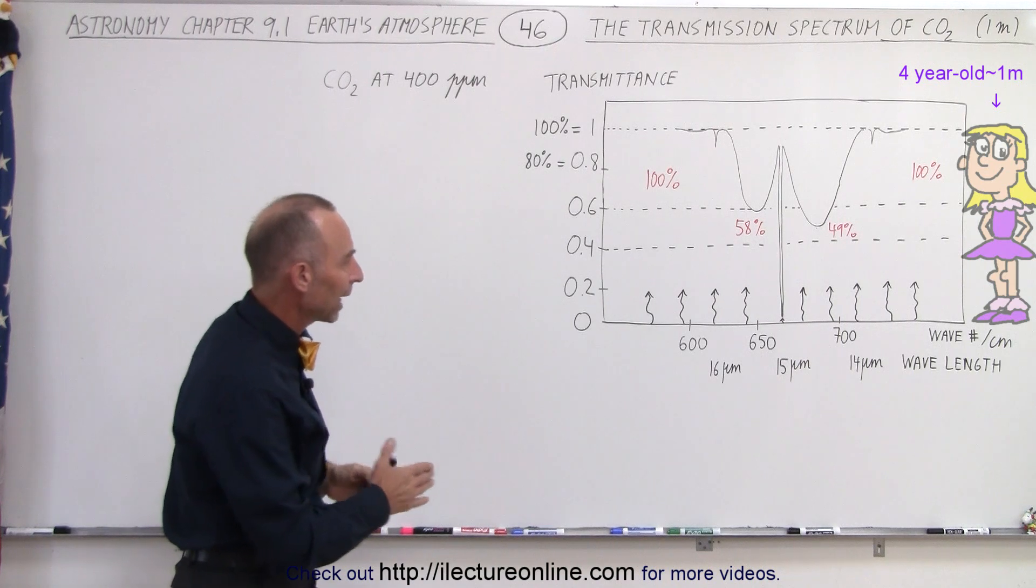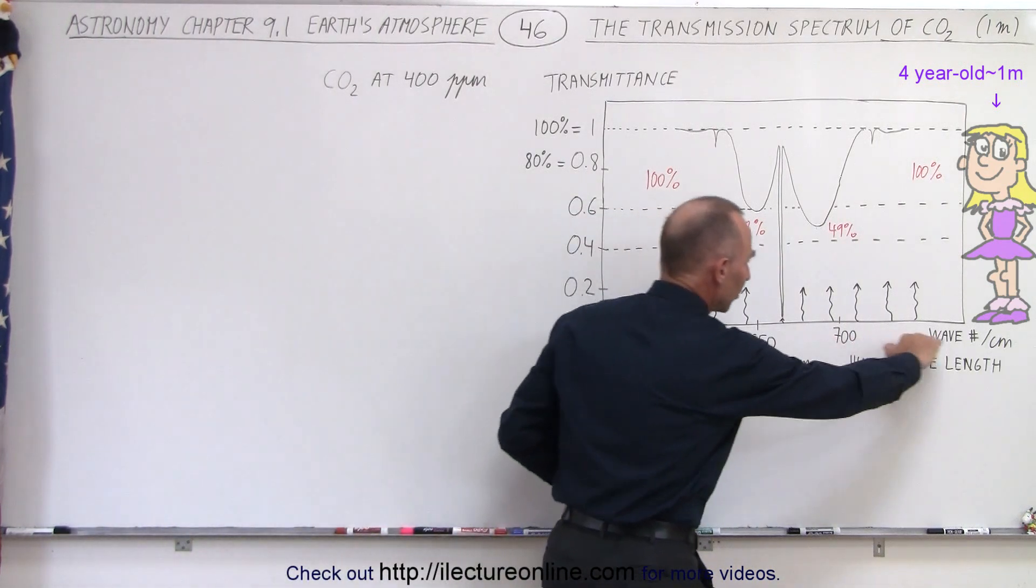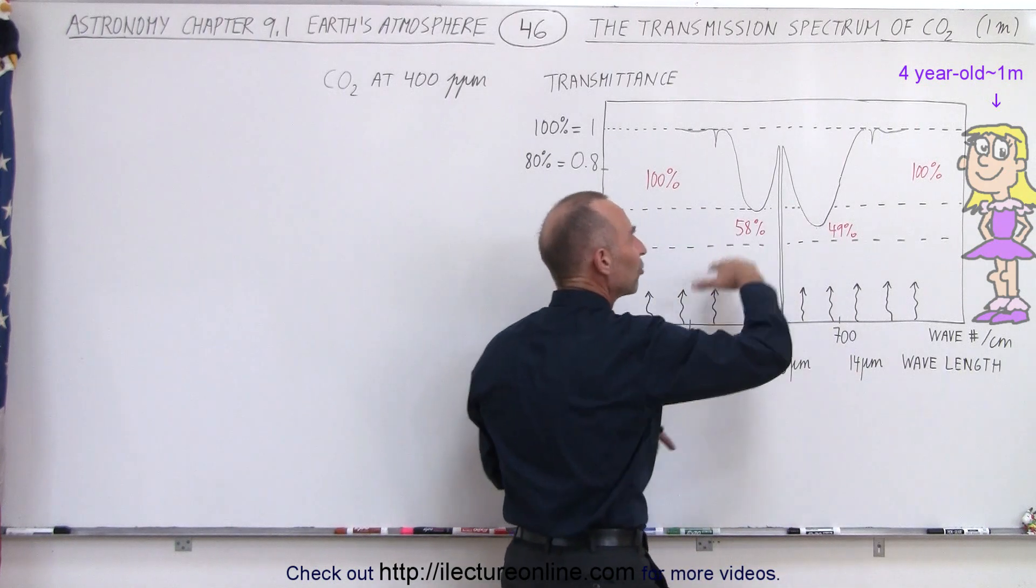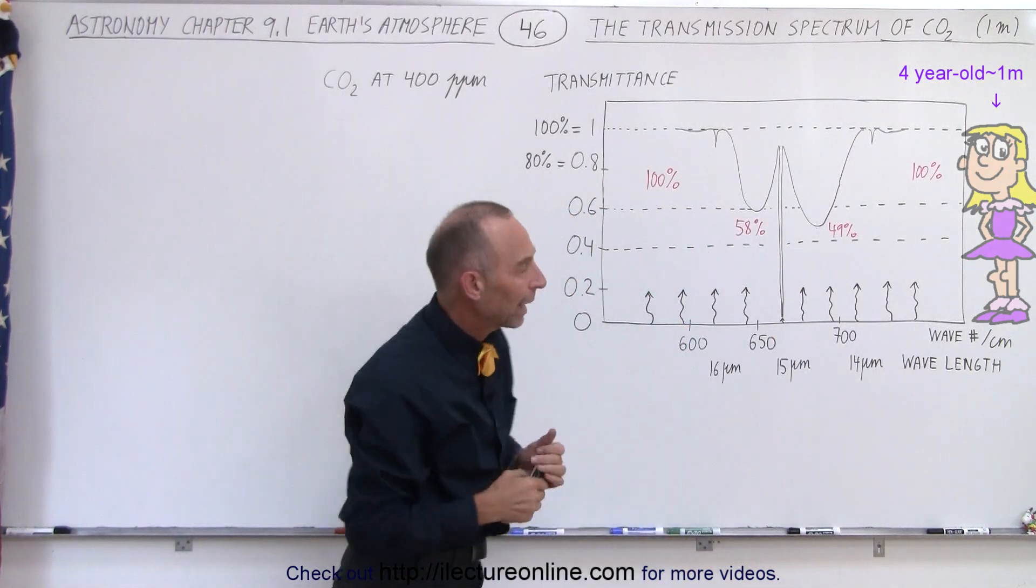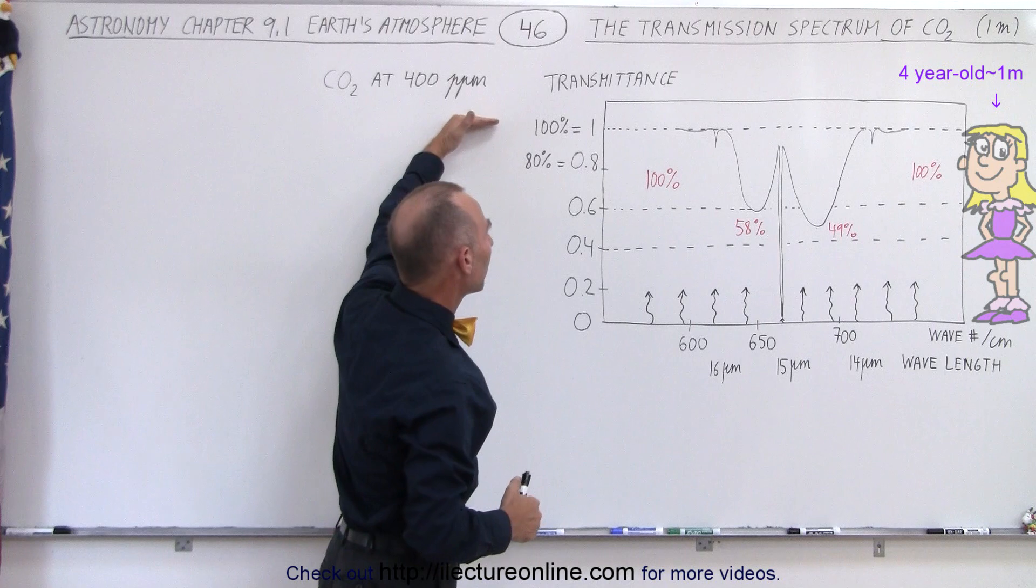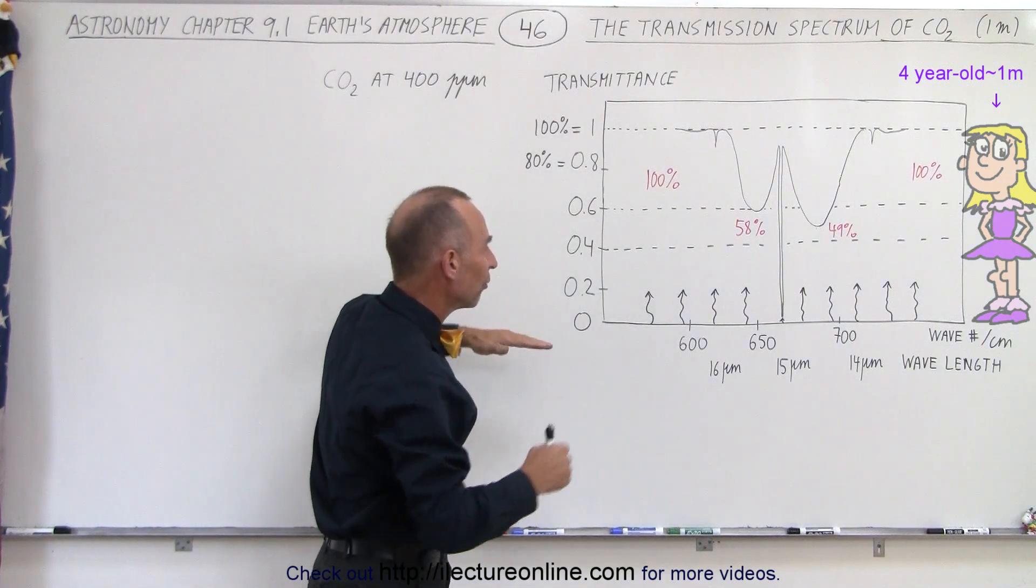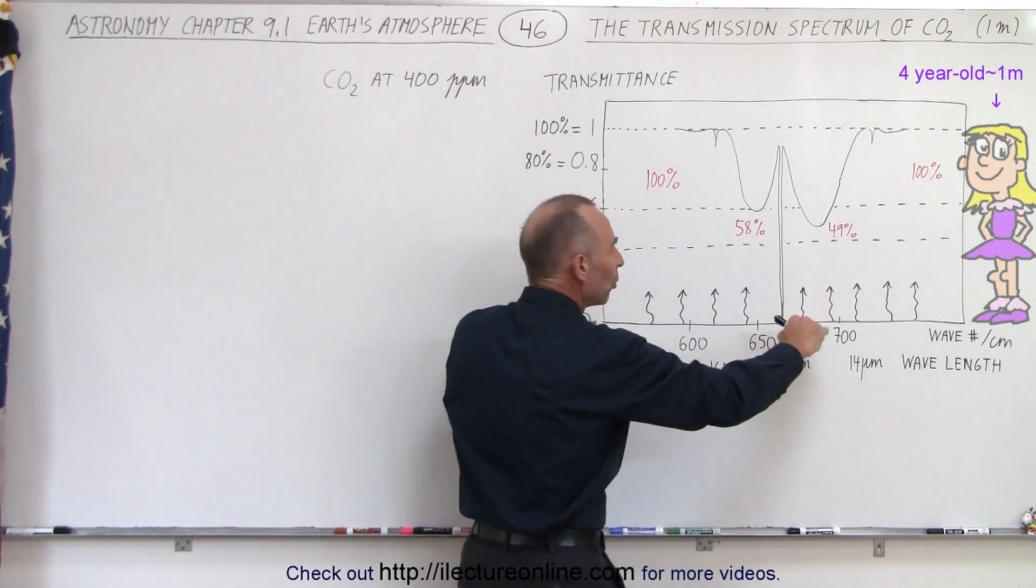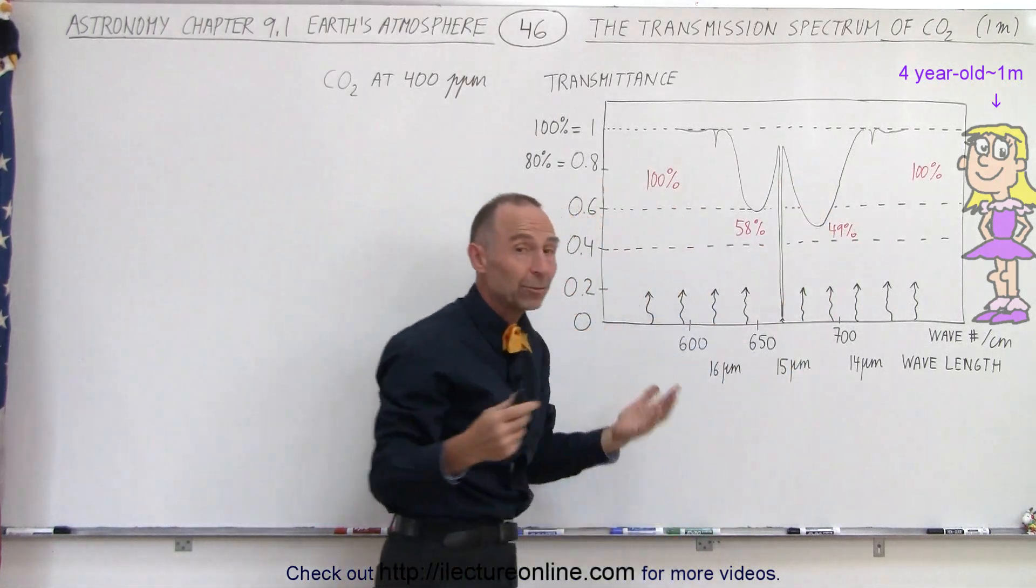And so what we're going to look at is, for the various wave numbers or for the various wavelengths, what kind of transmission do we have? At an elevation of one meter above the surface, what percent of all the radiation of these particular wavelengths or wave numbers will reach that point without being absorbed?